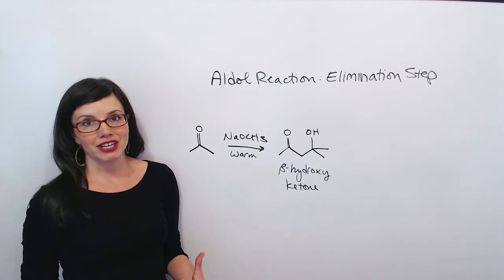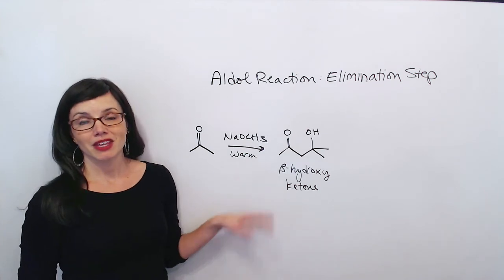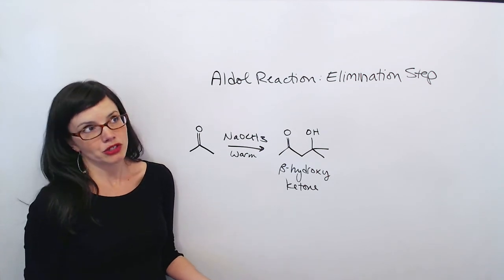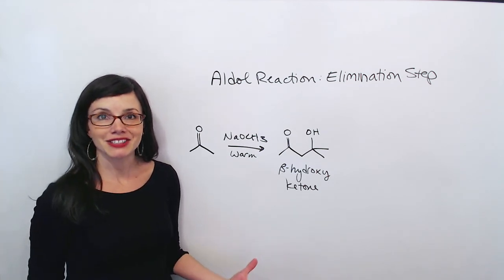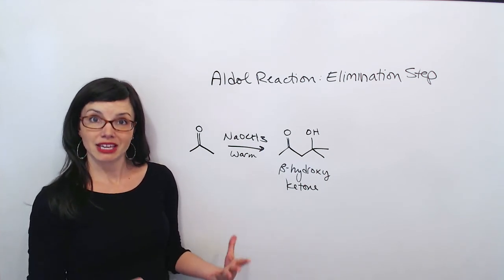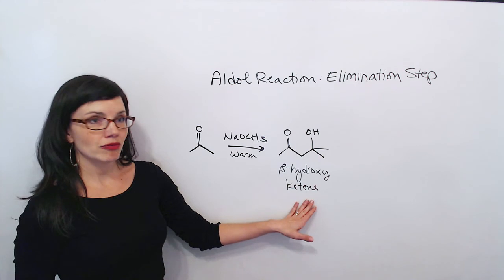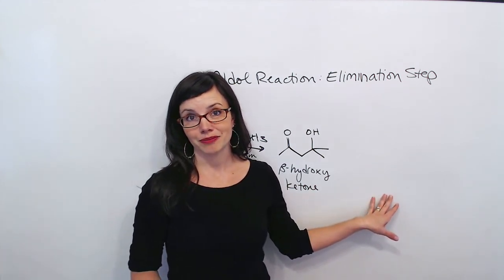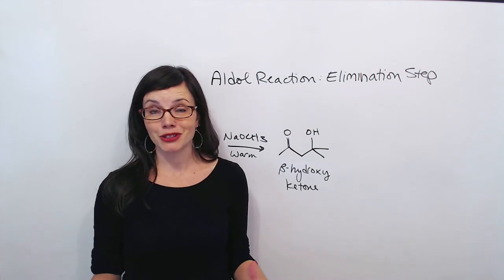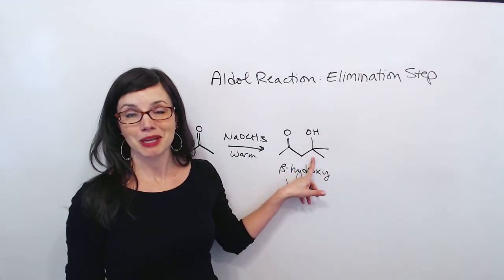Now I need to show you how things would be a little bit different if I had done this reaction under warm conditions. Sometimes you're going to see just the word warm or the word heat, or maybe a specific warm temperature like 80 degrees Celsius or 110 degrees Celsius. But when you see some indication that the reaction has been done with heat, you're going to have to do a second step to predict your product. Not just the addition reaction, but also an elimination reaction. And when we say elimination, it really is the same kind of elimination that you learned in first semester organic. We're going to eliminate a leaving group and form a carbon-carbon double bond.